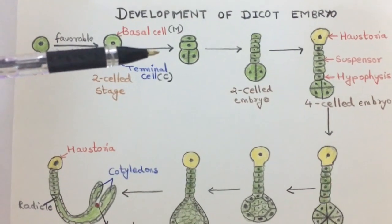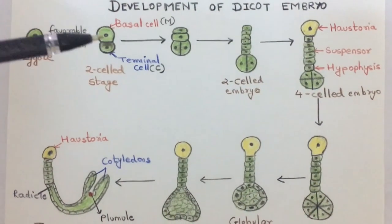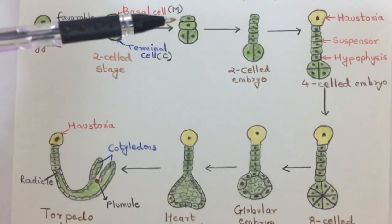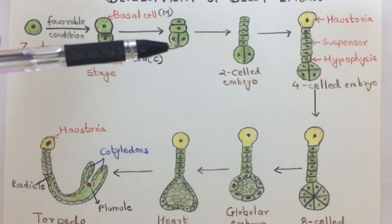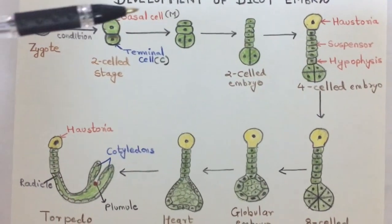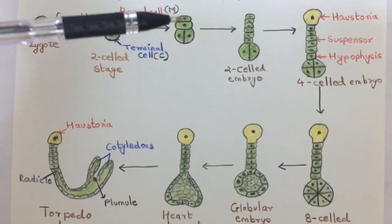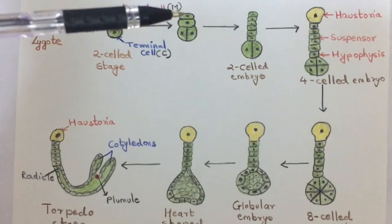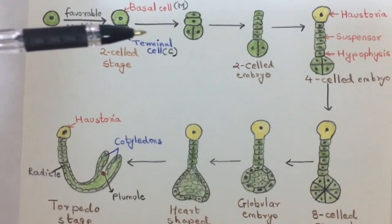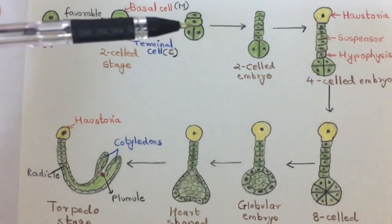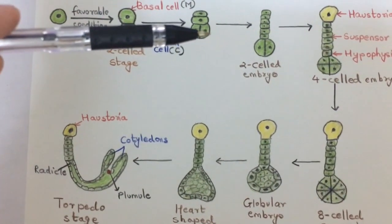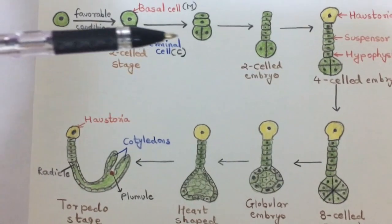Further, it divides mitotically — we can see division has taken place in both the basal cell and the terminal cell. The basal cell undergoes a longitudinal division, forming two cells, and the terminal cell has a vertical division, also forming two cells.